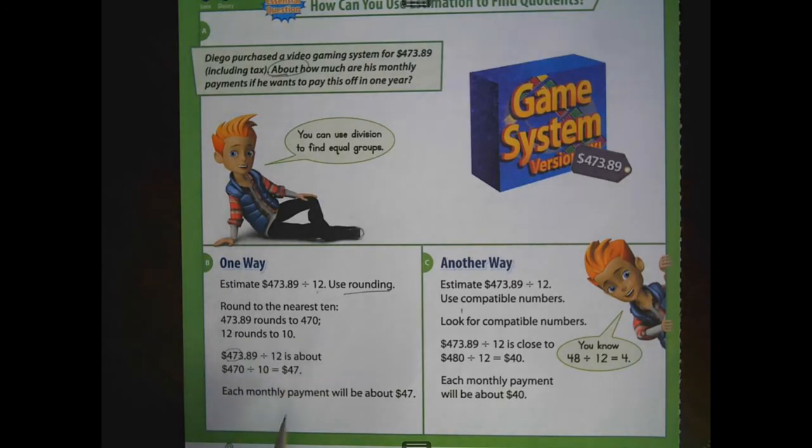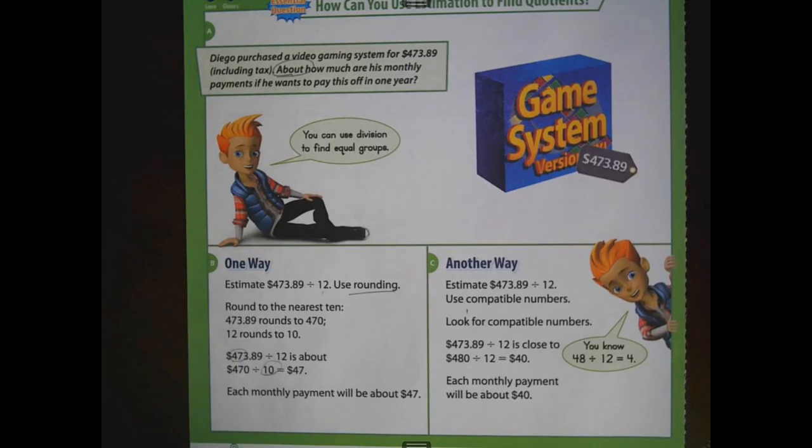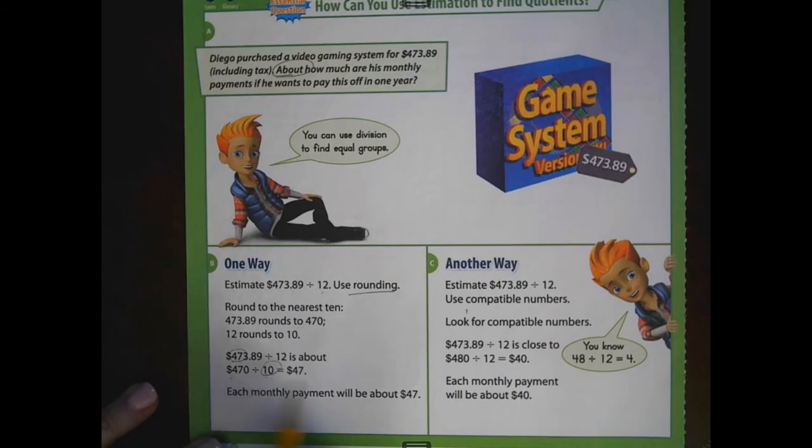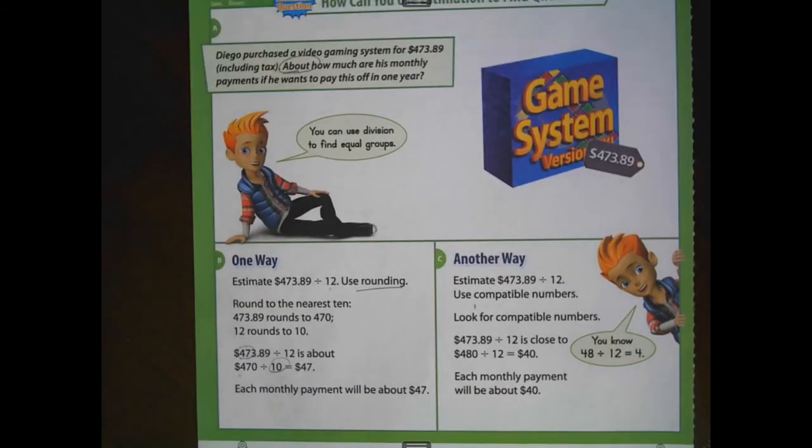They're saying that we're going to use, oh no, sorry, that is divisible by 10. That's right. So we're going to leave this 470 divided by 10 and get 47. So each monthly payment will be about 47. Look at the next way. The next way we're going to use compatible numbers.